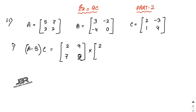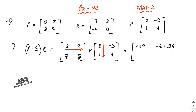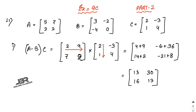Now multiply (A - B) by matrix C = [2, -3; 1, 4]. First row, first column: 2×2 + 9×1 = 4 + 9 = 13. First row, second column: 2×(−3) + 9×4 = −6 + 36 = 30. Second row: 7×2 + 2×1 = 16, and 7×(−3) + 2×4 = −21 + 8 = −13. So (A-B)C = [13, 30; 16, -13].